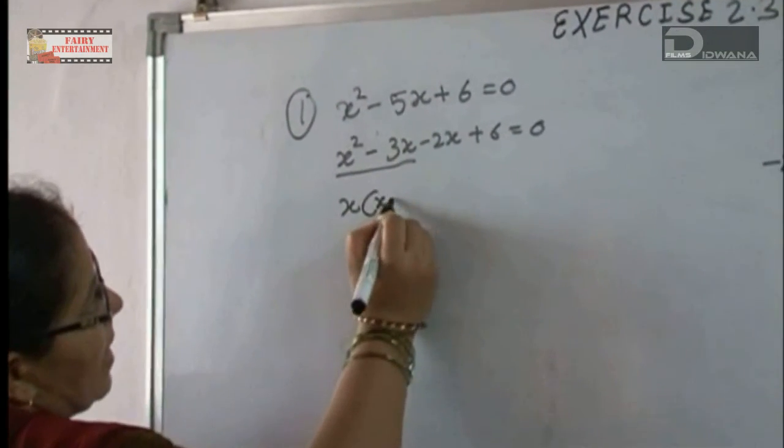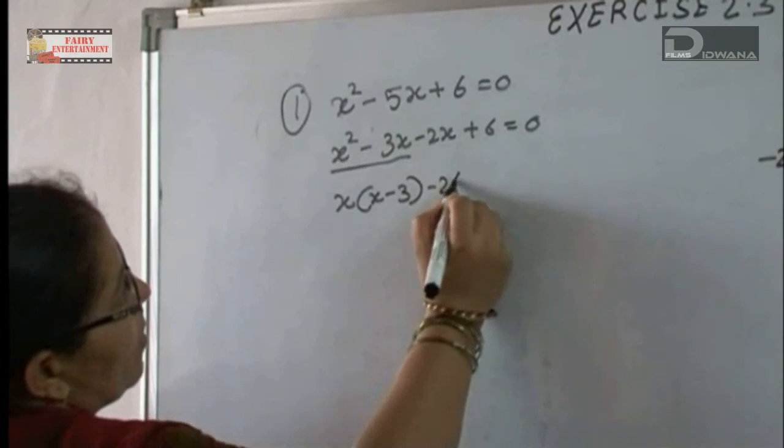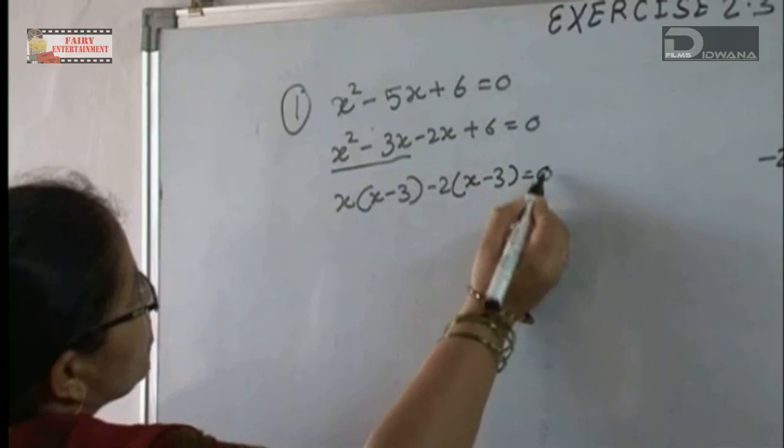We will take here common x. So inside there is x minus 3, minus 2 we will take common here, x minus 3 equal to 0.